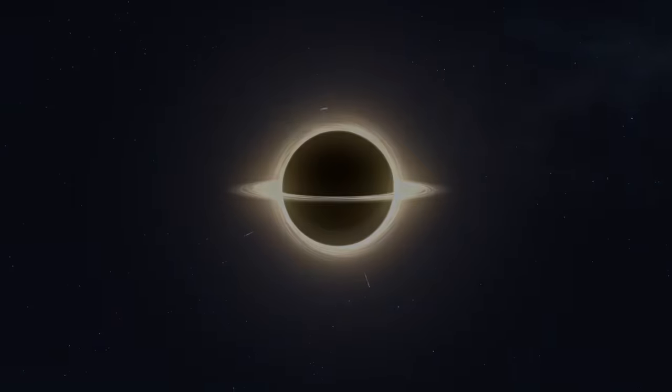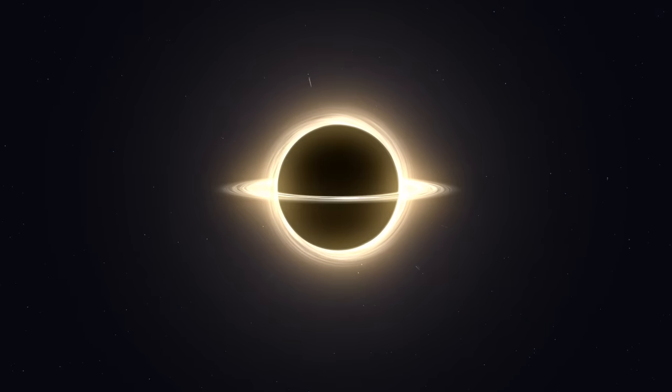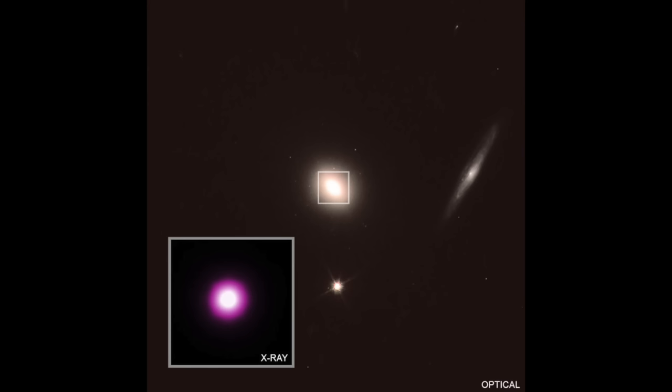Now what's remarkable about this event is that it transformed a dormant or quiescent black hole, one that wasn't really feeding, into one that we can observe, thanks to the matter falling in from that star. And this is what it looked like.